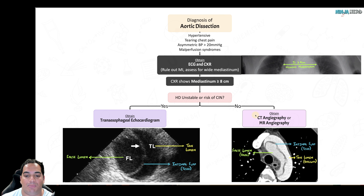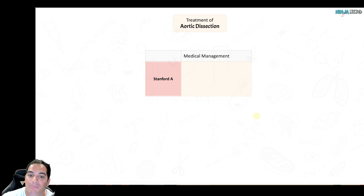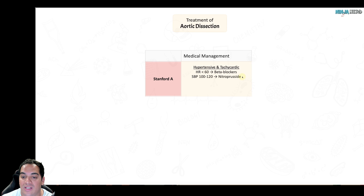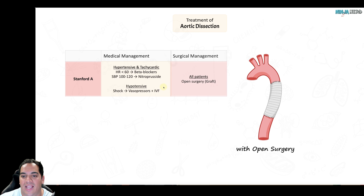Treatment depends on the type. Stanford A is very dangerous due to risk of aortic regurgitation, MI, cardiac tamponade, and rupture. Medically temporize first: use nitroprusside to vasodilate and lower blood pressure, and beta-blockers to reduce heart rate. If the patient is in frank hemorrhagic shock, use pressors and IV fluids or blood. But the definitive treatment for Stanford A is always surgical intervention — get them to surgery as soon as possible.